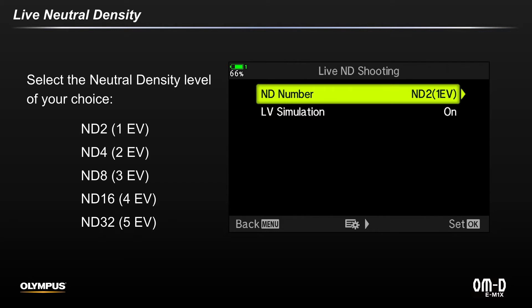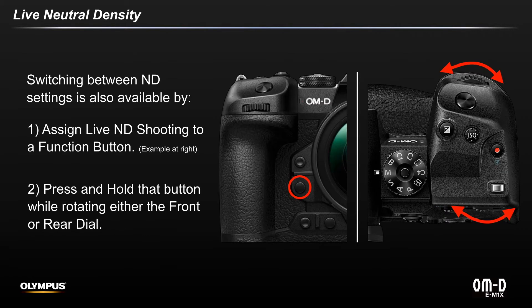I'll talk about the Live View Simulation setting in a bit. Another option for switching the EV levels, and even turning the feature on and off, is to assign Live ND Shooting to a function button. In this example, this front button is now an on-off button for Live ND. With Live ND on, press and hold the same function button and turn either the front or the rear dial to make your EV level selection.